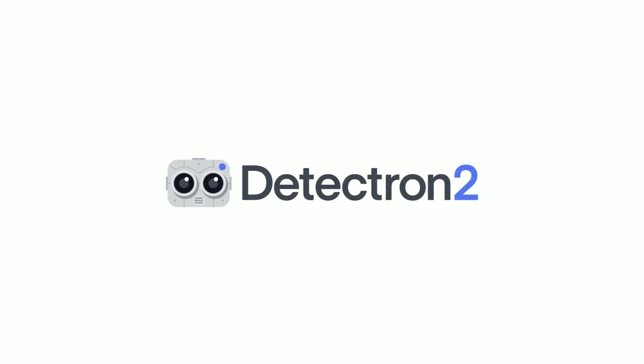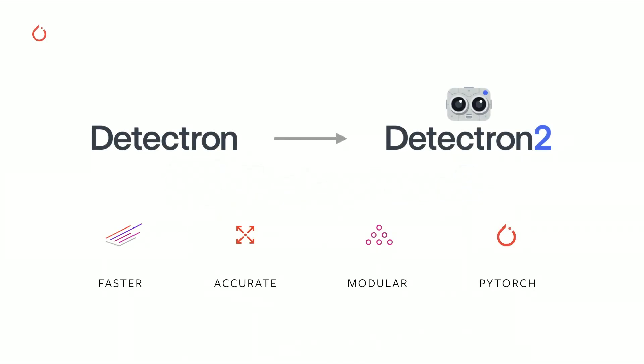And today, we're open sourcing Detectron 2, the object detection platform that produced this video. You might have heard of Detectron, which is the object detection platform that we open sourced almost two years ago. We've been asked a lot about when we will have a PyTorch version of it, and Detectron 2 is built completely in PyTorch. It is a ground-up rewrite of Detectron, with faster speed, latest and more accurate models, and also a more modular design.